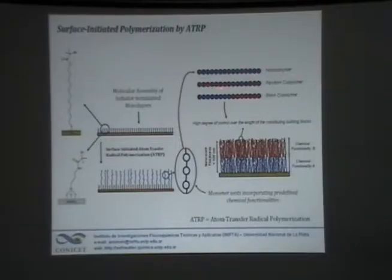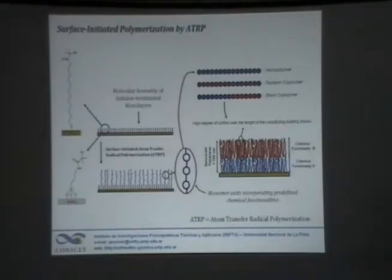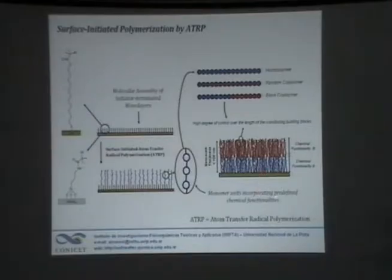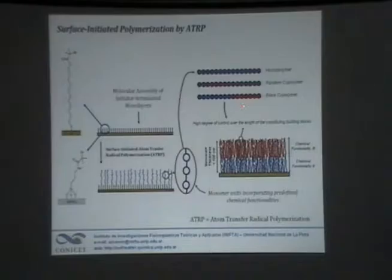You can grow polymers, change different functionalities, and grow random polymers or block polymers. Interestingly, depending on the way we are growing the polymer out from the surface, you can create and take control of the blocks growing from the surface. You can create phases with different functional and chemical features just by choosing the monomer units on the surface.